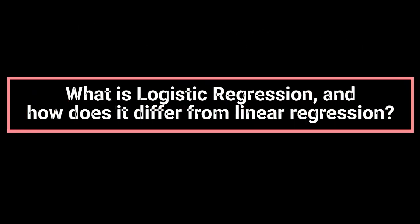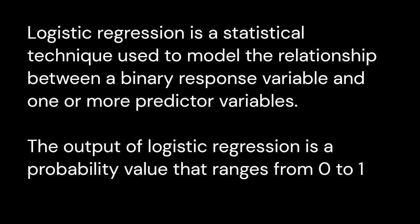What is logistic regression, and how does it differ from linear regression? Logistic regression is a statistical technique used to model the relationship between a binary response variable and one or more predictor variables. In contrast to linear regression, which models a continuous response variable, logistic regression models the probability of the response variable taking one of two possible values. The output of logistic regression is a probability value that ranges from 0 to 1, which can be interpreted as the likelihood of the event occurring.